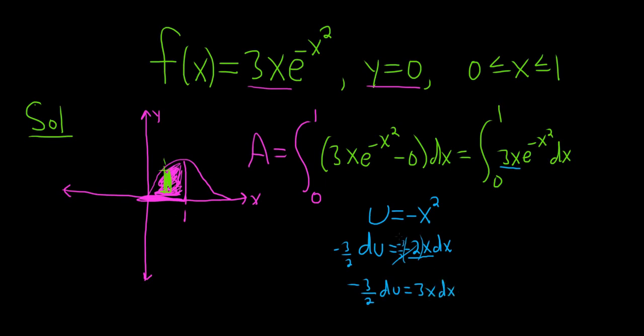What happens is the 2's cancel, so you get negative 3 halves du equals 3x dx, because the negative and the negative become positive. And so now we can make our substitution—the 3x dx will be equal to negative 3 halves du. However, since we have a definite integral, we're supposed to change the limits of integration.